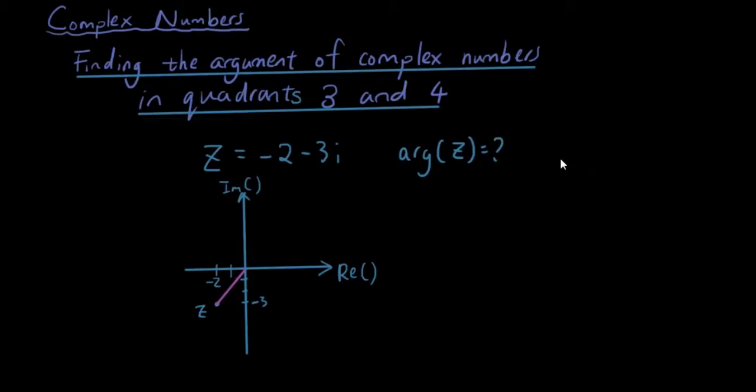So let's define a complex number as negative 2 minus 3i, and we want to find the argument of it. Negative 2 is the real part of this complex number, so you can see we have from the origin moved 2 units to the left on the real axis.